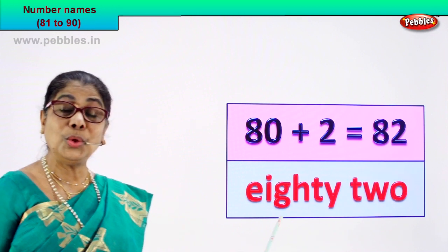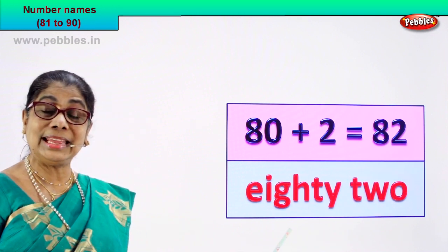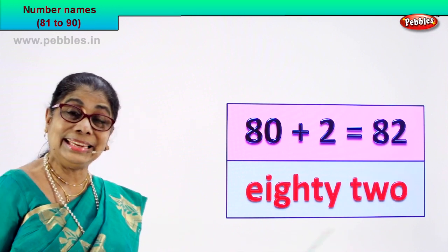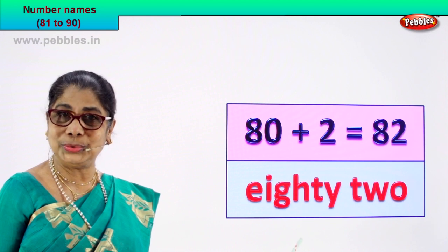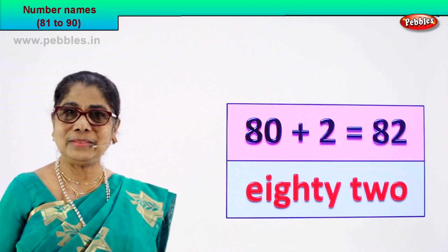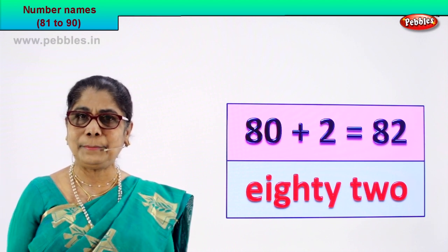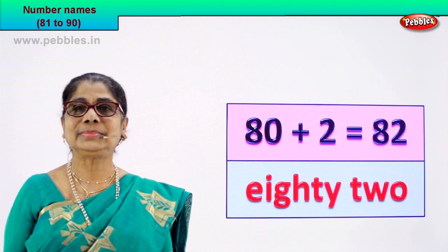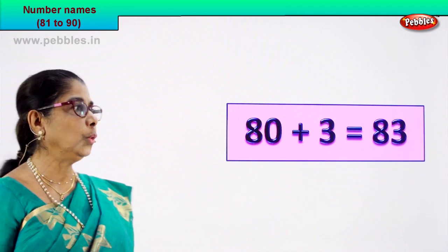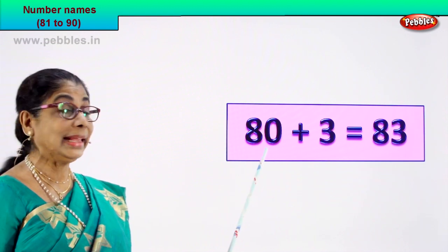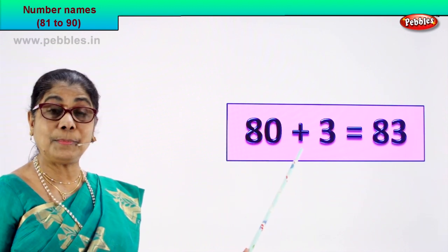82 — the numeral 82 — we write its name as eighty-two. Very good! Shall we take our next number?